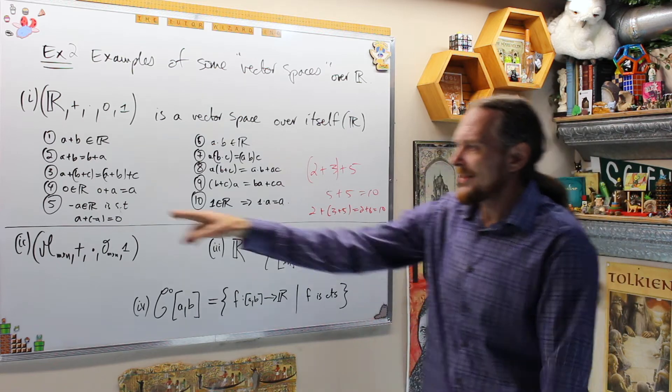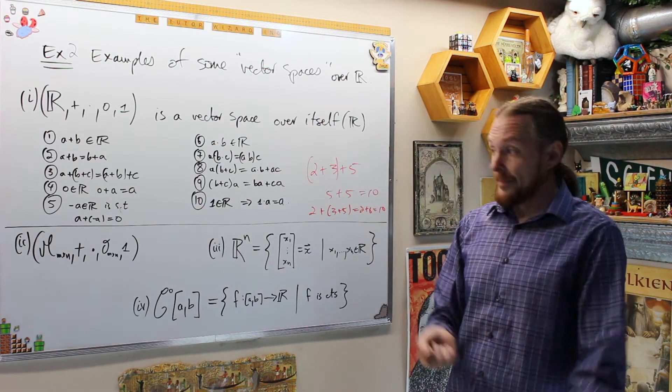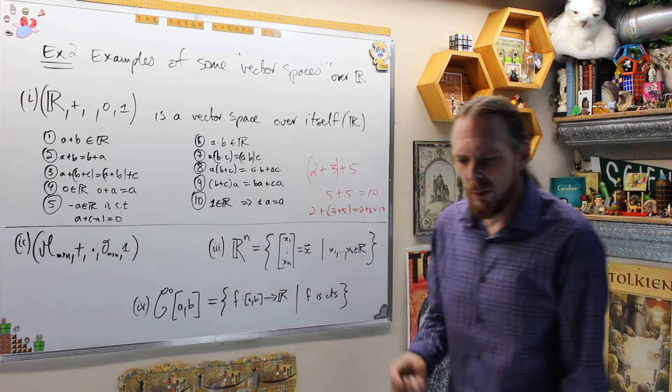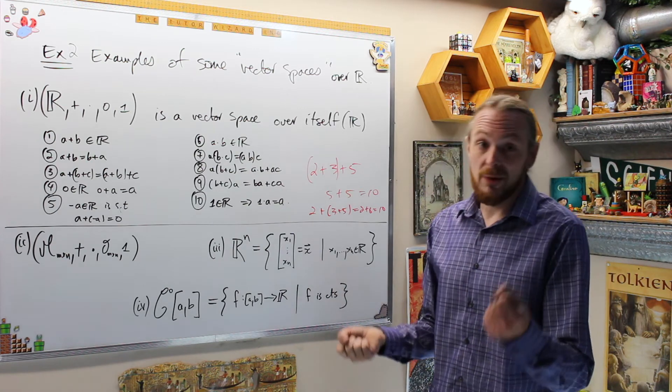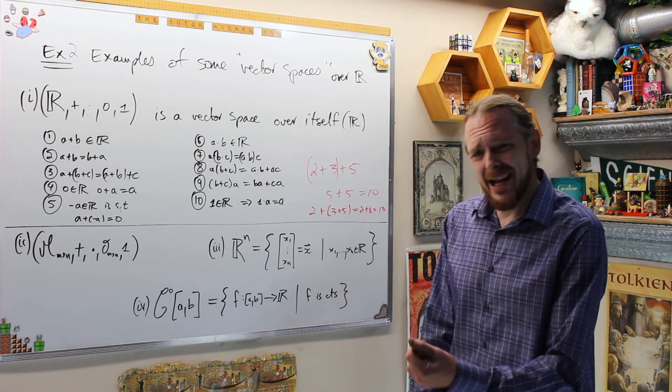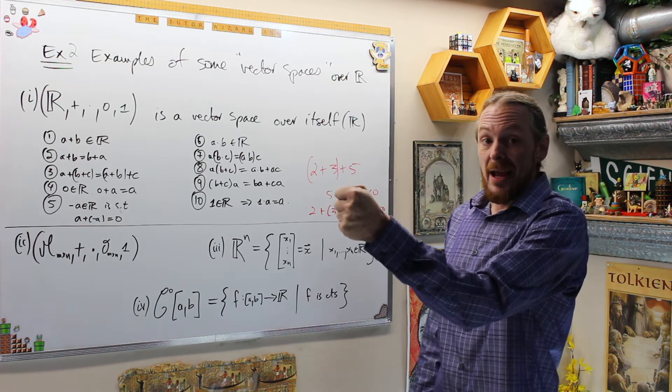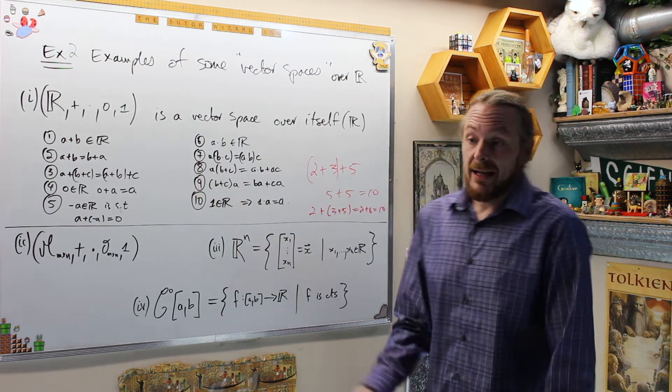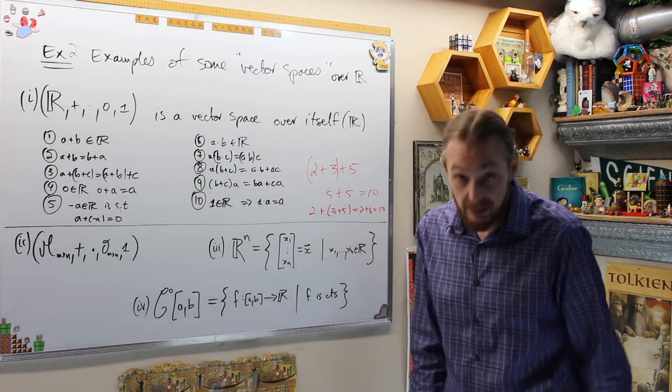What this one's saying is there's a number zero which leaves everybody alone. Zero plus A is zero for every number. And as soon as you have that, what we want is the additive inverse or the negative, which says, is there a guy which, when I add it to A, I would get exactly nothing? And yes, that's called the negative. So A + (-A) = 0.